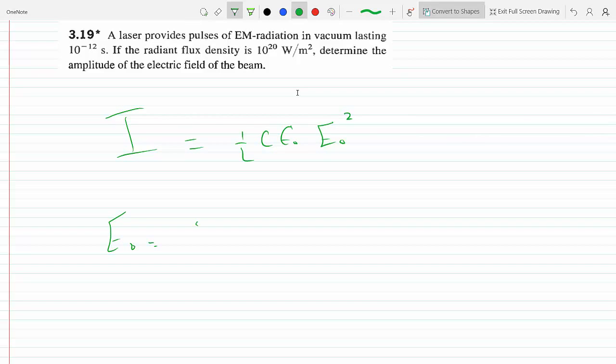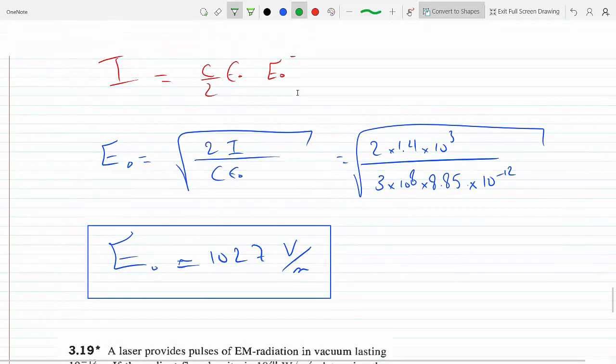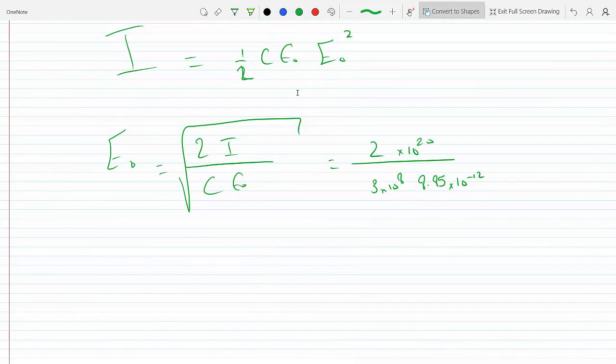And we just solve for E. This is E equals square root of 2I over C epsilon naught. So 2 times 10 to the 20, C which is 3 times 10 to the 8th speed of light, and epsilon naught is 8.85 times 10 to the minus 12, I believe. Yeah, and so let's see what we get here if we calculate this.